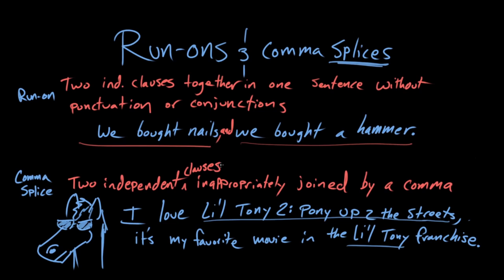So we've got independent clause number one — remember, this thing could stand on its own as a sentence. I love Little Tony 2, Pony Up to the Streets — that could be its own sentence, end it with a period. It's my favorite movie in the Little Tony franchise — period. But we have these two independent clauses; we cannot join them with just a comma.